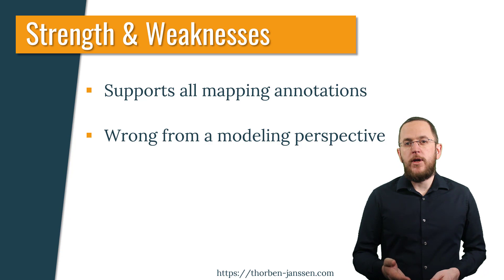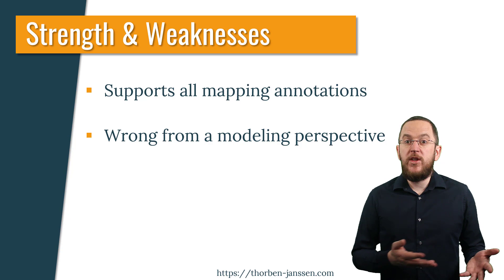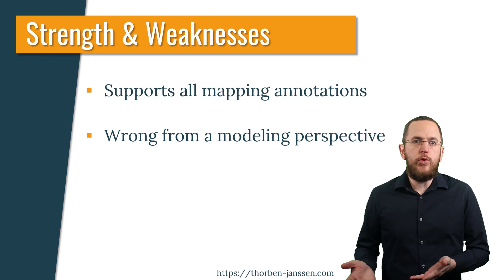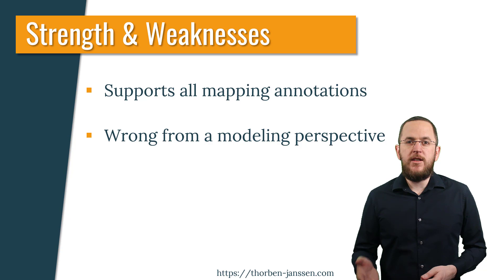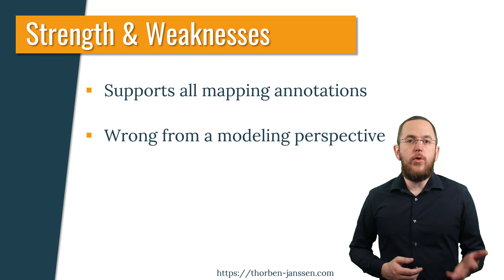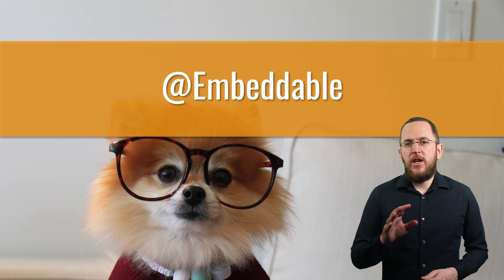However, this mapping approach feels wrong when looking at it from a modeling perspective. The ChessTournament isn't an abstract entity — it only shares attributes defined by that class. Something like an abstract entity will not come up in a domain analysis because it doesn't exist in the real world, and it's unlikely we will actively use it in business code. The only reason to introduce it as a superclass is to define the mapping of shared technical attributes. Based on object-oriented design principles, you should better use composition instead of inheritance to achieve this.